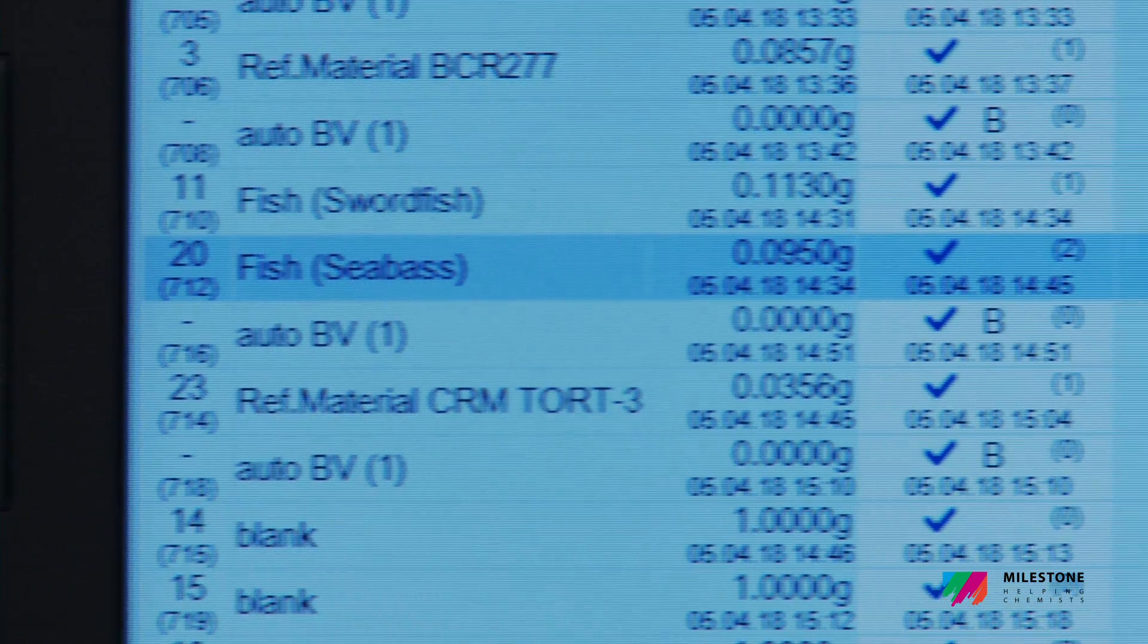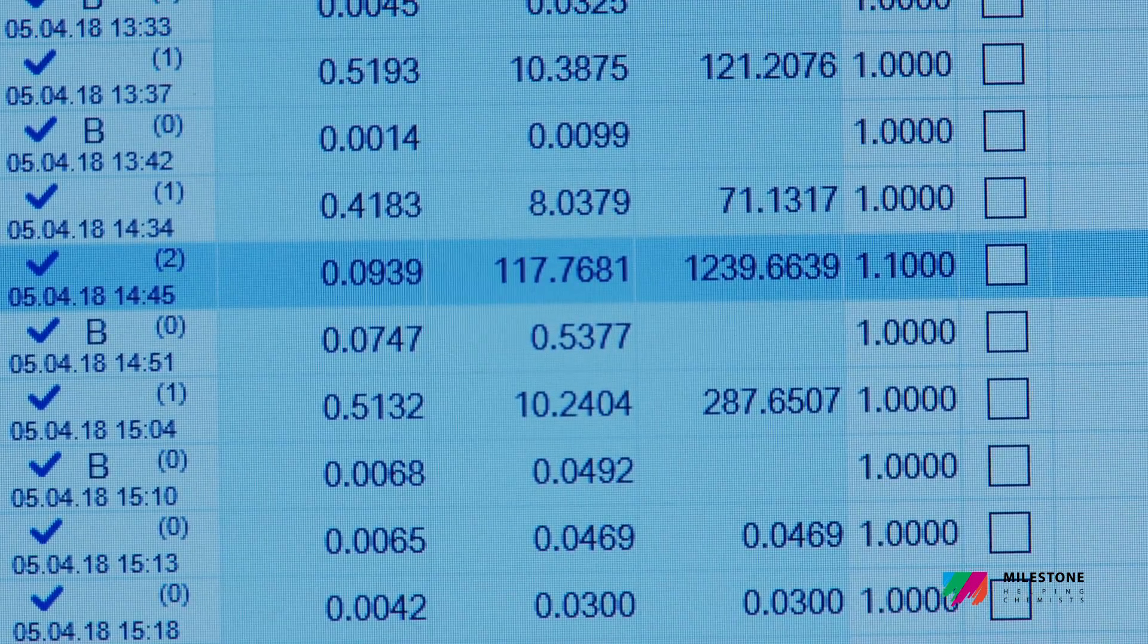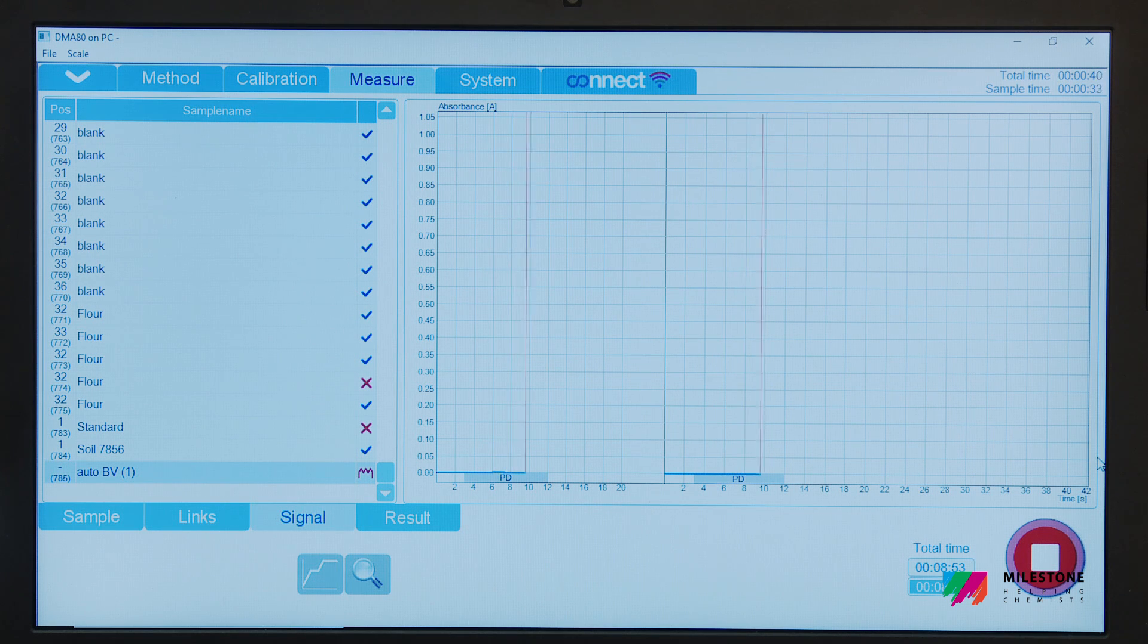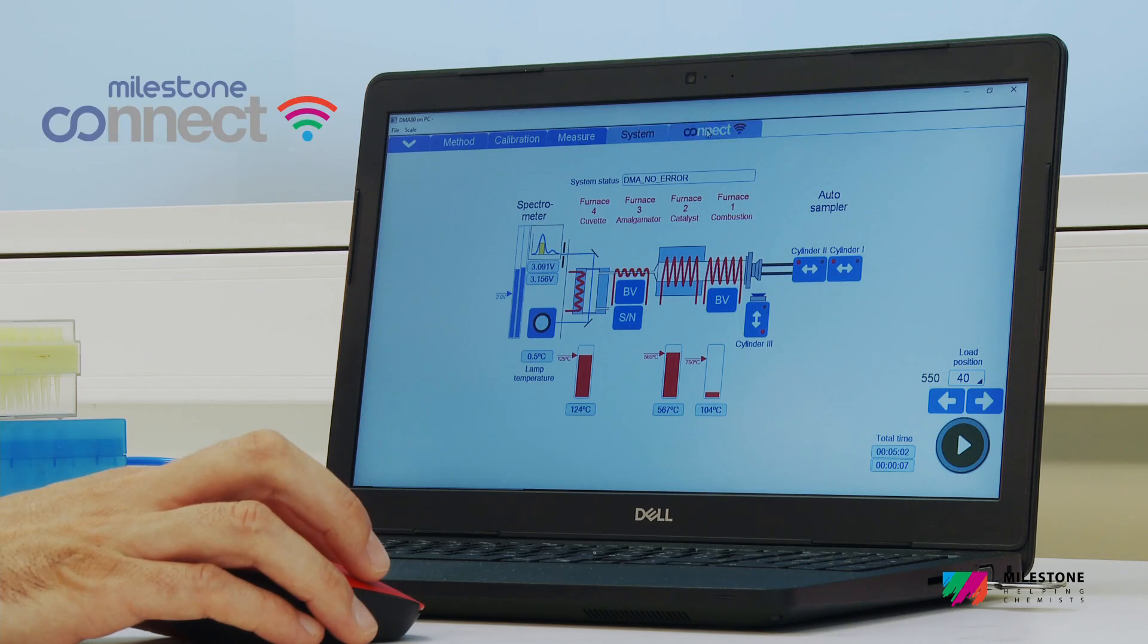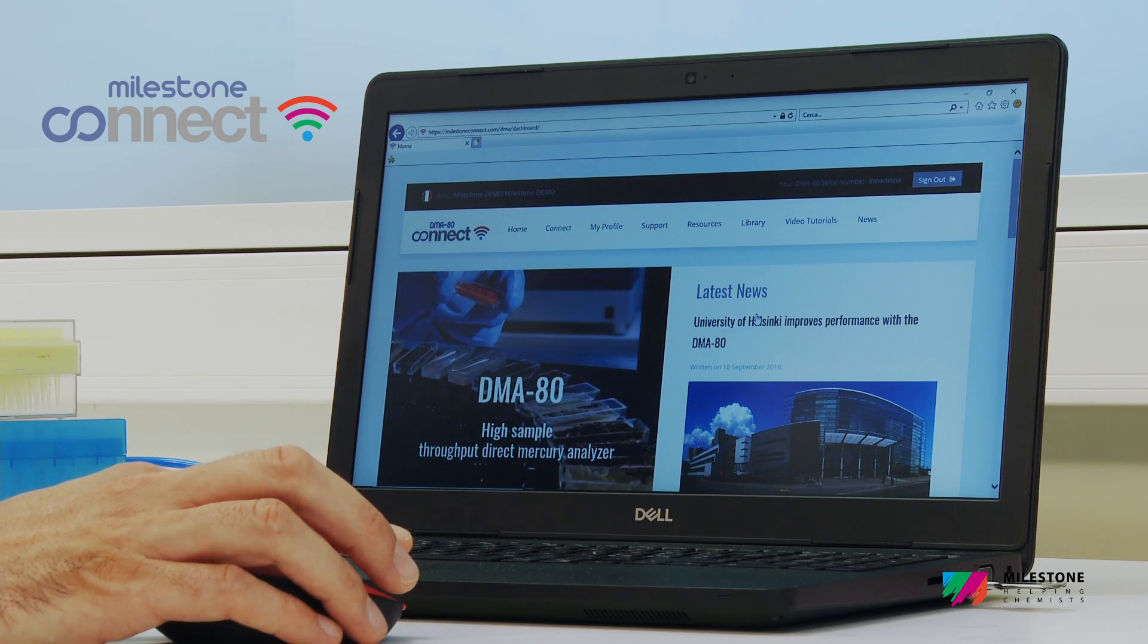Memory effects in mercury analysis have been overcome thanks to the auto-blank features, which will avoid overestimation and ensure low blanks. A unique web-based application is included with the DMA80 EVO.